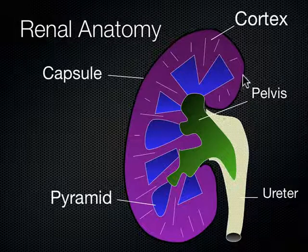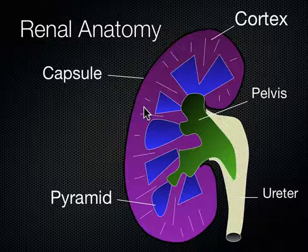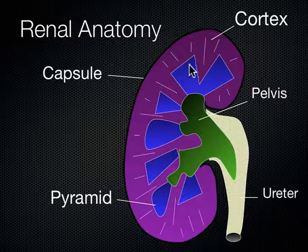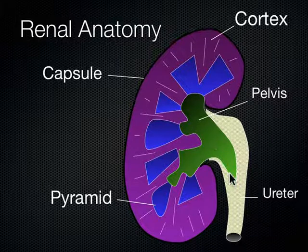This is a schematic diagram of the kidney. You can see the capsule structure out here, the cortex where all the nephrons are, and they drain into pyramid structures full of urine that eventually coalesce into the renal pelvis — sometimes called the renal sinus — and then that drains down the ureter into the bladder.